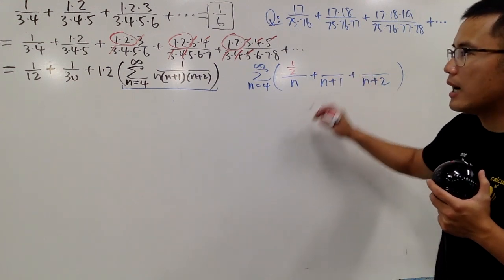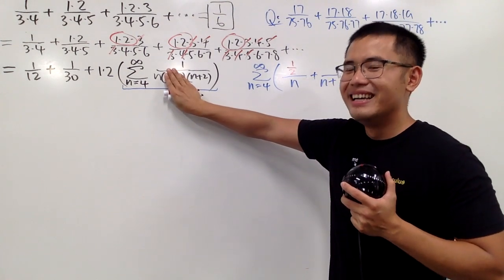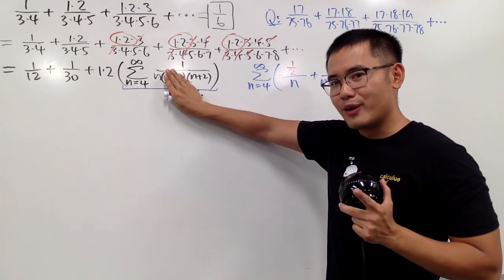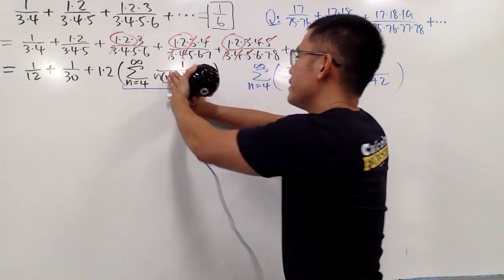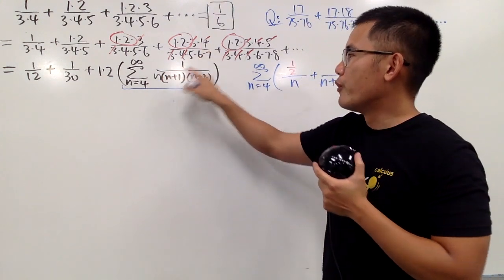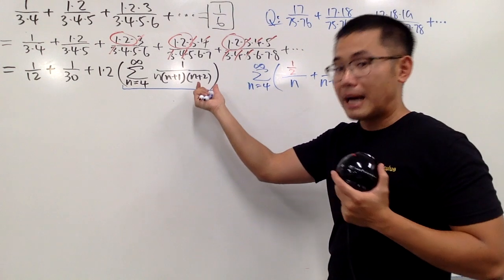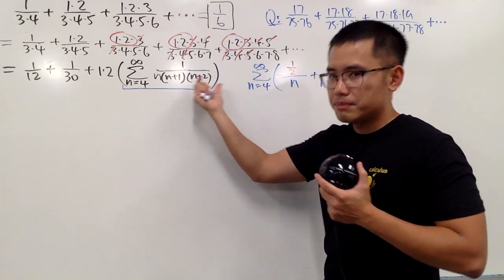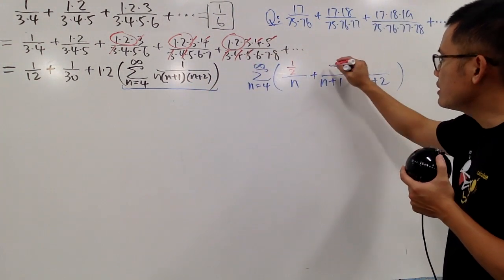To figure this up, we will have to cover this up. Let n equal to negative one though. Putting negative one here and here and work it out. So, we have one over negative one times positive one. Negative one plus two is positive one. All in all, we get negative one.